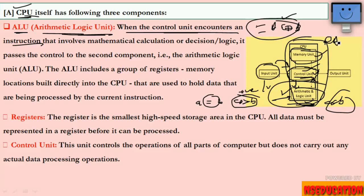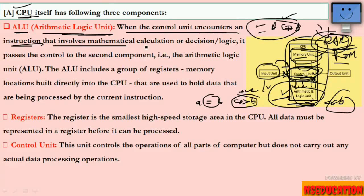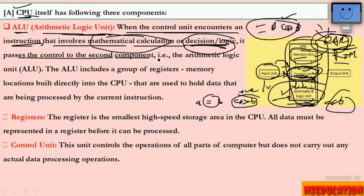The Control Unit controls the operation of all parts of the computer — when to take input, when to give output. When the control unit encounters an instruction involving mathematical calculation or decision logic, it passes control to the Arithmetic Logic Unit. The memory unit stores things like RAM, which is temporary memory. For example, currently I have a PowerPoint open and recording — all this is stored in RAM, and when the computer is switched off, all of it is erased.